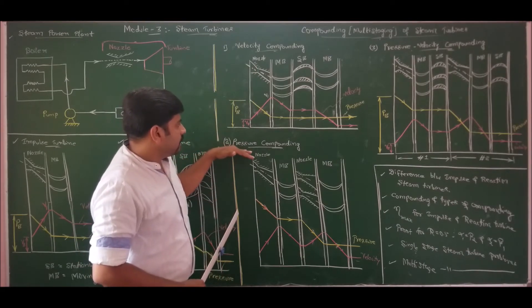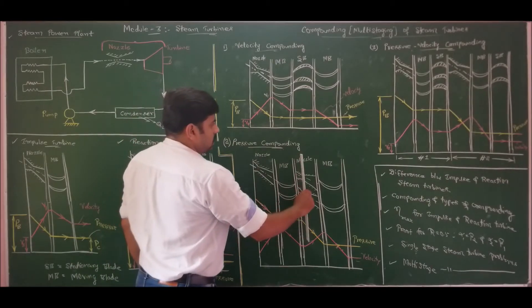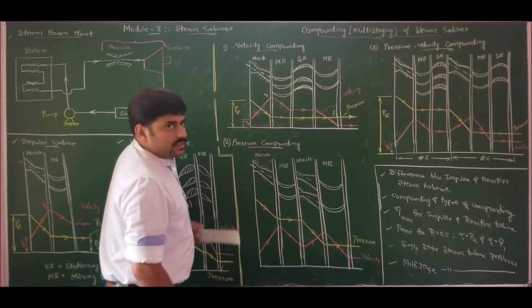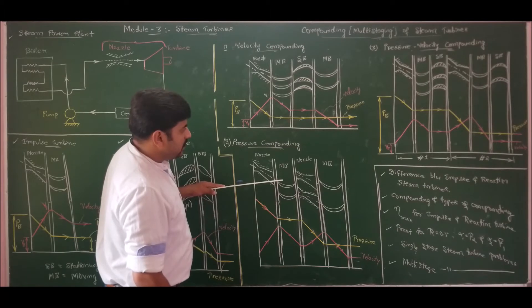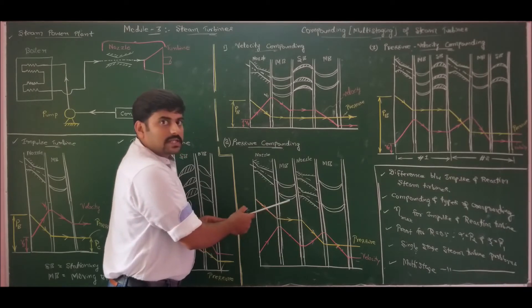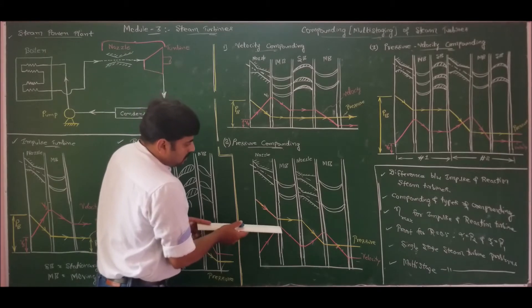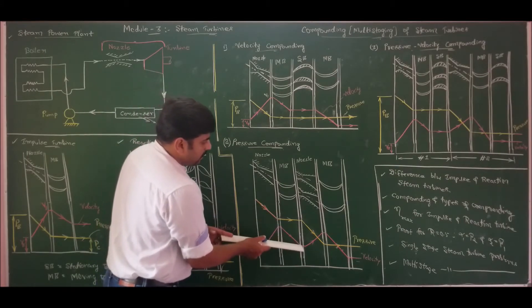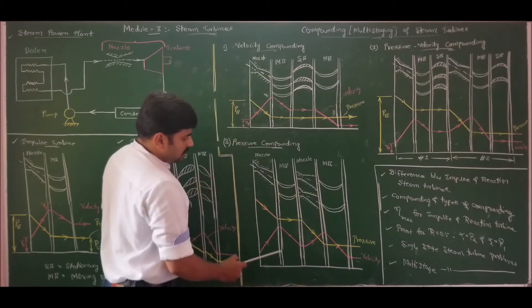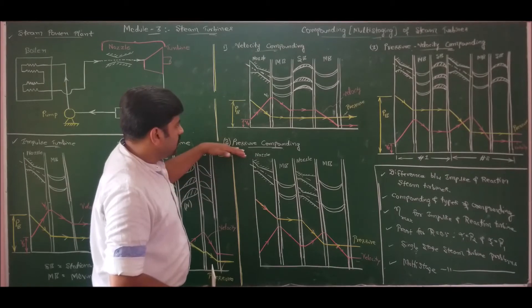For pressure compounding, the arrangement is: nozzle, moving blade, nozzle, moving blade — alternating rows of nozzles and moving blades. When steam passes through each nozzle, a pressure drop is observed and velocity increases. On the symmetric moving blades, pressure remains constant and velocity decreases. Then again in the next nozzle, velocity increases and pressure decreases, and in the moving blade, pressure remains constant and velocity decreases. In this way, we make maximum use of the kinetic energy in the steam — this is pressure compounded steam turbines.